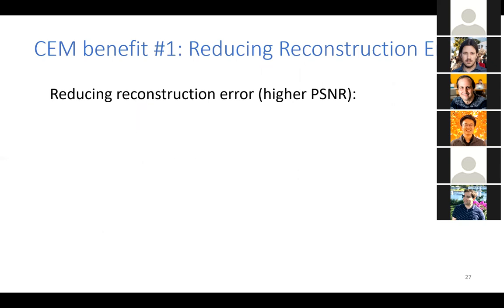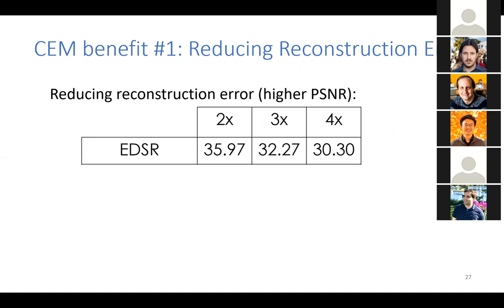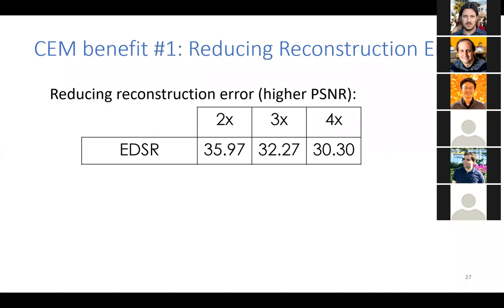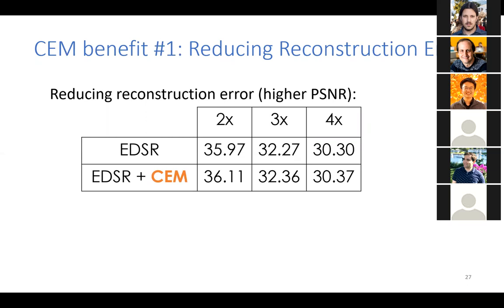We can use the CEM to wrap any existing super-resolution network, even pre-trained ones. The first benefit is that it is guaranteed to only improve PSNR — it can only reduce the reconstruction error. To validate this, we took a pre-trained EDSR model at super-resolution factors 2, 3, and 4, and measured average PSNR over the BSD100 dataset. Wrapping the output with our CEM yields some improvement in PSNR. The main point is that it is guaranteed it cannot harm — it can only reduce the error because of this consistency.